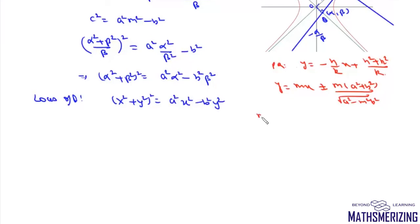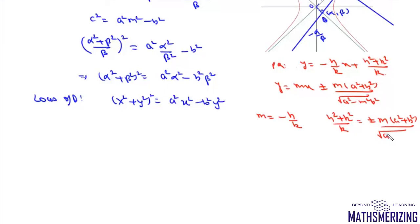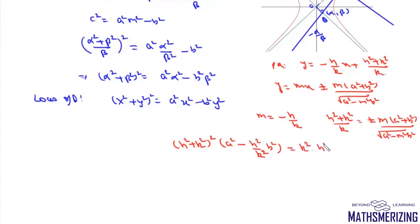Comparing the two equations, we get m = −h/k and (h² + k²)/k = ±m(a² + b²) / √(a² − m²b²). We square and cross multiply: (h² + k²)² · (a² − m²b²) = m²(a² + b²)². Substituting m² = h²/k², this becomes (h² + k²)² · (a² − (h²/k²)b²) = (h²/k²)(a² + b²)².